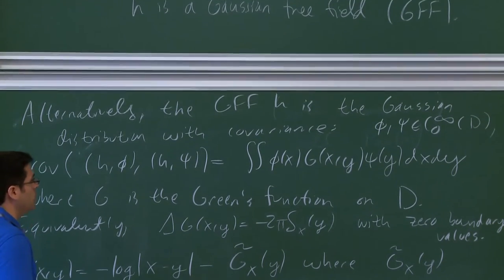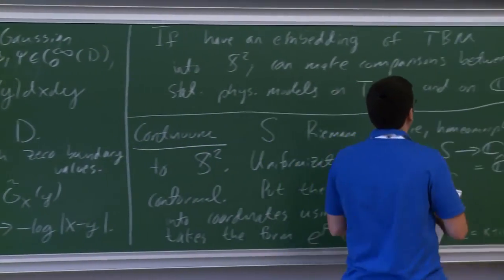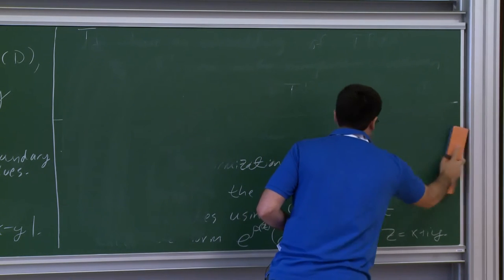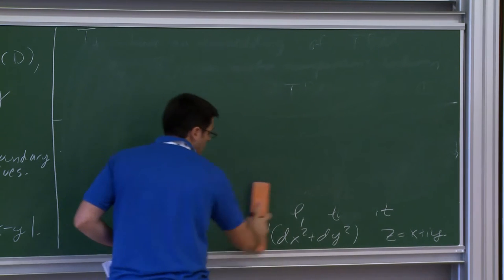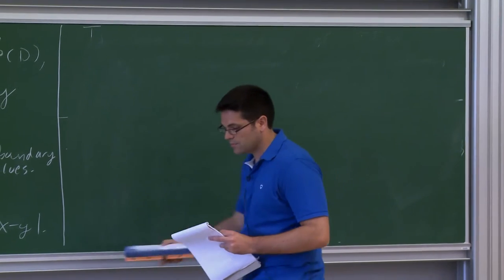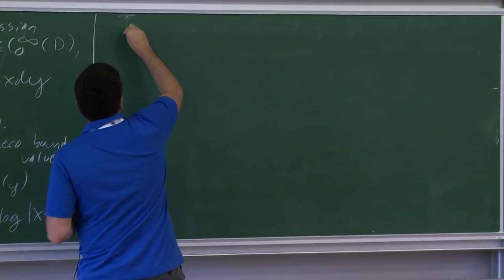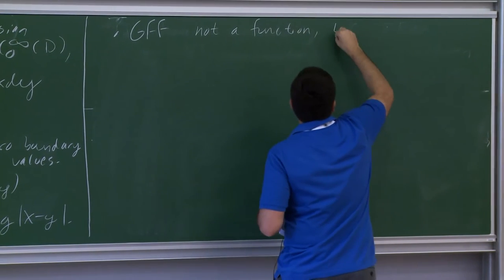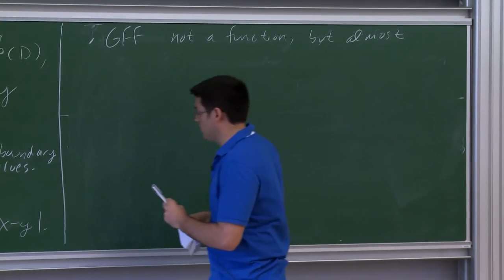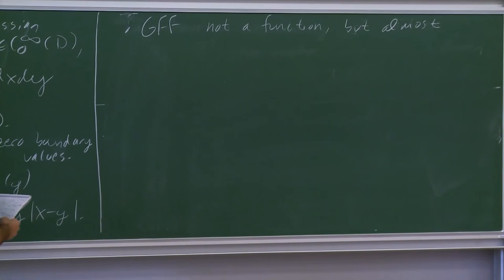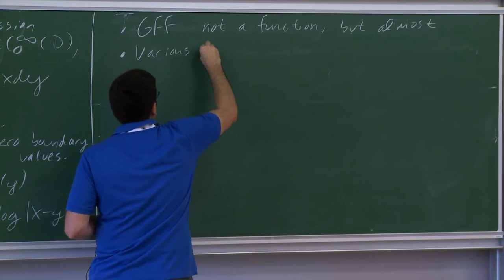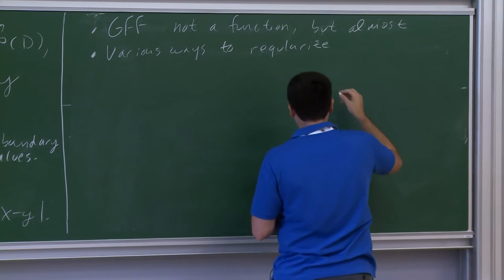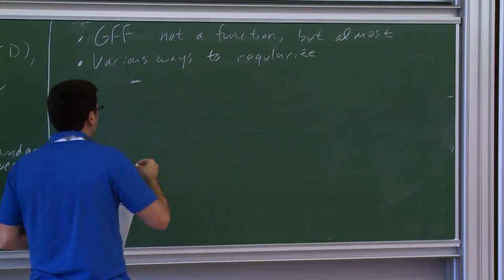There are a few important properties of the GFF relevant for the construction of the Liouville quantum gravity measure and the LQG sphere. First, the Gaussian free field is not a function in two dimensions, but it's almost a function, and in many situations we pretend it is. One way to regularize it is the circle average regularization: for a GFF instance H, let H_ε(z) be the average of H on the boundary of the ball centered at z of radius ε. This is a Gaussian process as a function of ε and z.